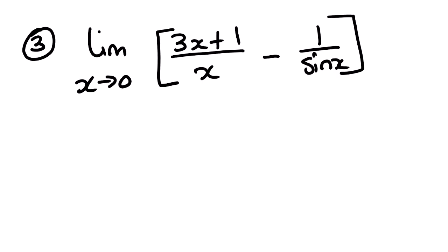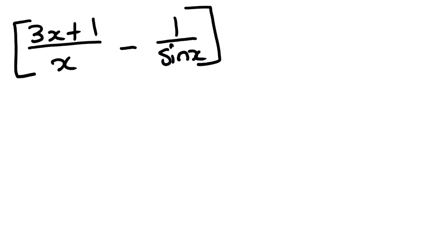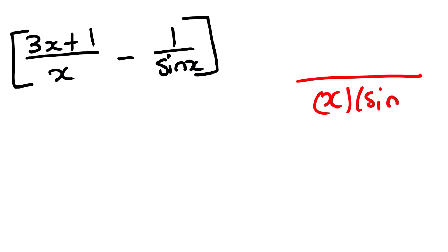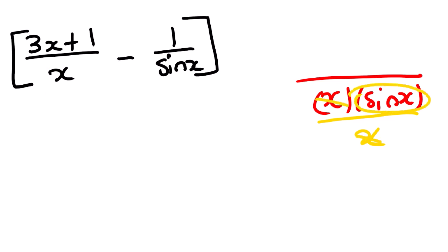Next: limit as x approaches 0 of (3x plus 1)/x minus 1/sin(x). The first thing we need to do is simplify this. The LCD will be x·sin(x). Looking at the first term with x as the denominator: when we divide the denominator into the LCD, x cancels, and sin(x) multiplies the numerator, giving sin(x) times (3x plus 1).